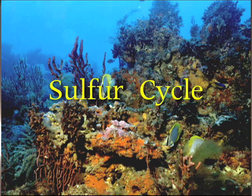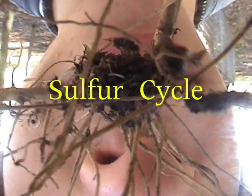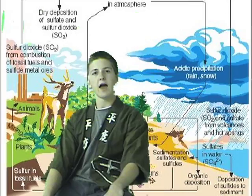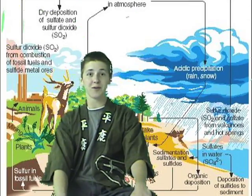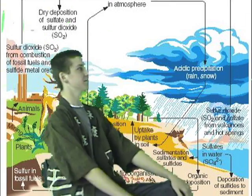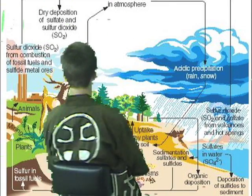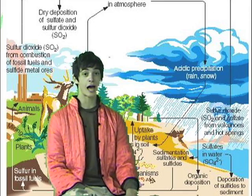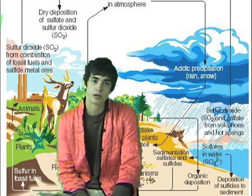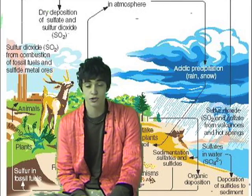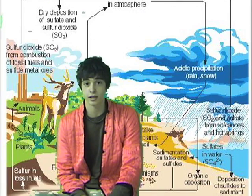Sulfur cycle! Hello, environmental science students. We're here to tell you about the sulfur cycle. Sulfur is an element on the periodic table. It cycles throughout the biosphere and has a great impact on our overall environment.